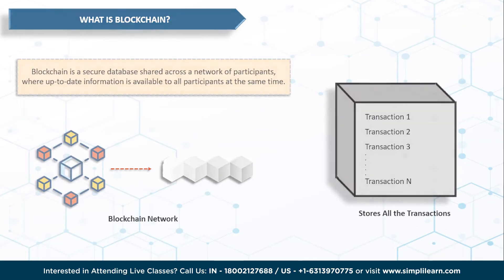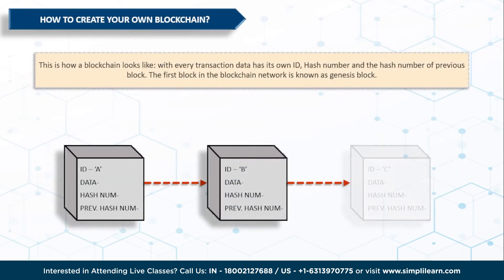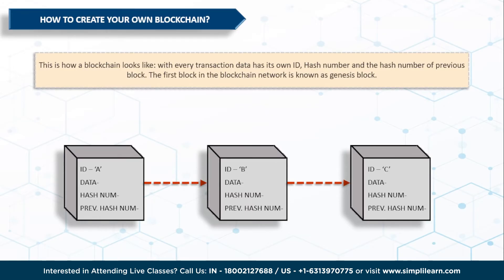Let me tell you the basic structure of a blockchain. There is a block where multiple transactions are stored in one go, which is known as data. But the block itself has its own identity: an ID, a hash number, and a previous hash number that represents the hash number of its previous block. The first block in a chain is known as the genesis block. After that, whatever blocks get added assume the hash number of the previous block as their previous hash number and then create their own hash number — and that's how mining works.